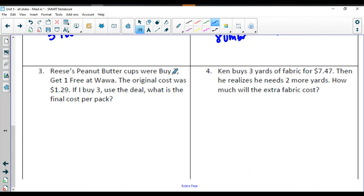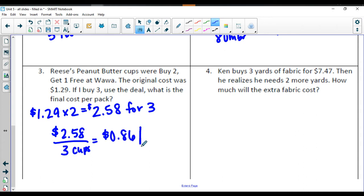In number 3, Reese's peanut butter cups were buy 2, get 1 free at Wawa. The original cost was $1.29. If I buy 3, use the deal, what is the final cost per pack? We have to buy 2 to actually get that third one, so we're going to be paying for two of them. $1.29 times 2 is going to actually get me 3, so I'm paying $2.58 for three of those Reese's peanut butter cups. Now to actually figure out the unit cost, I'm going to do $2.58 divided by 3 cups, and that's going to give me $0.86 per pack of Reese's. That's actually a pretty good deal. You get a decent amount of money off by doing it that way, if you actually need three of them.